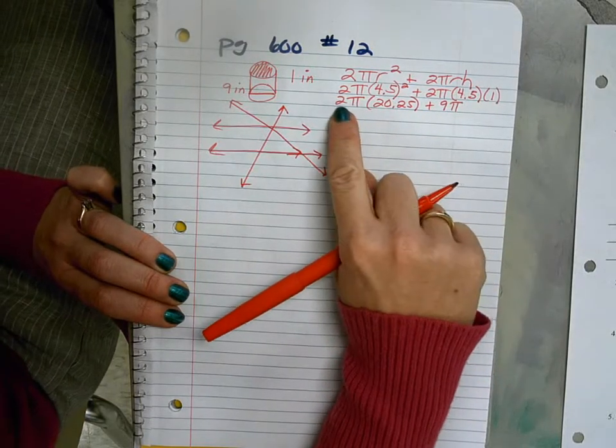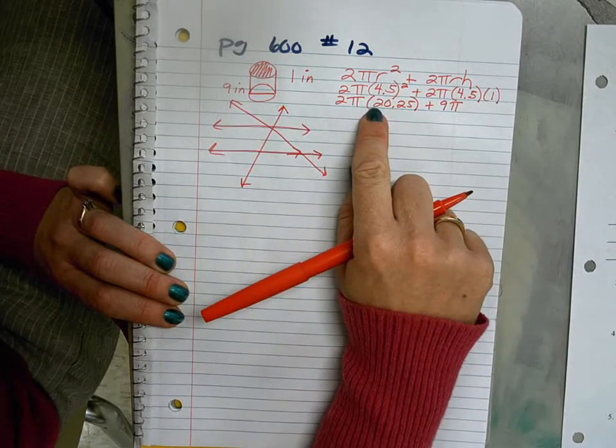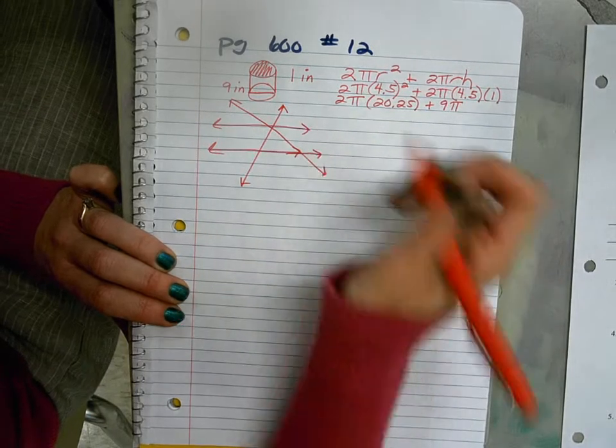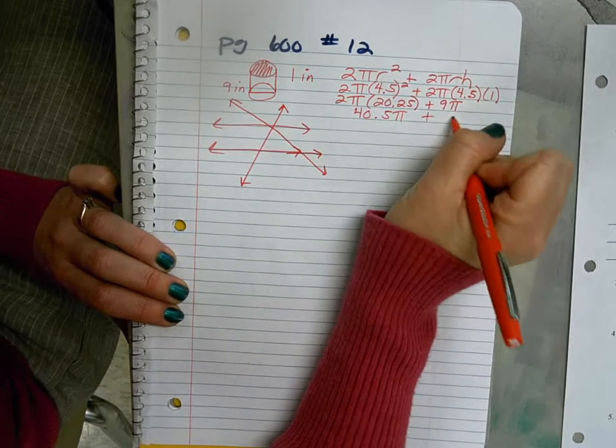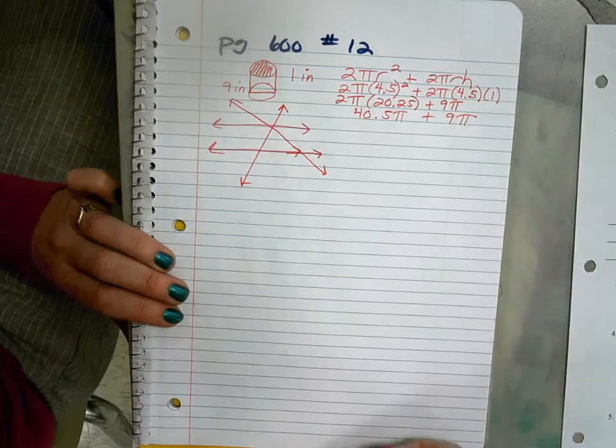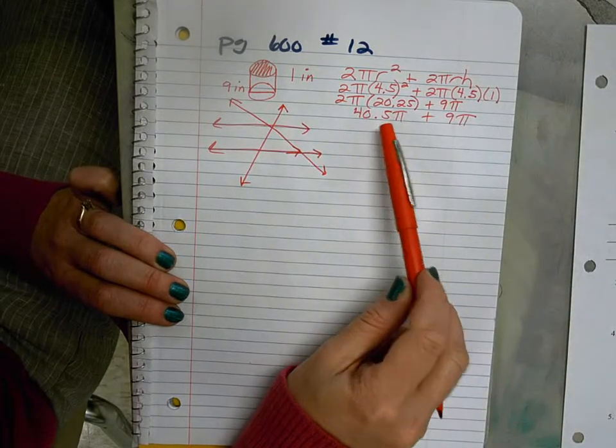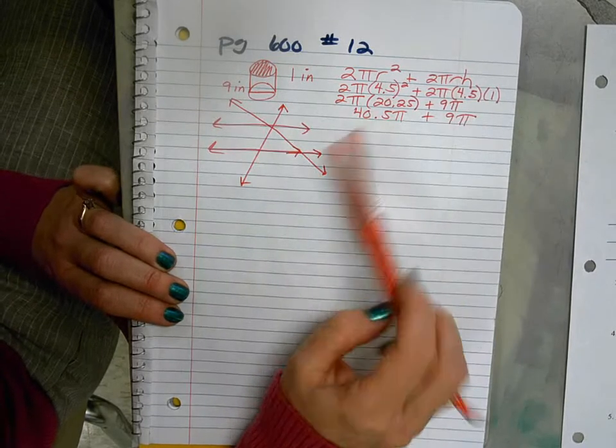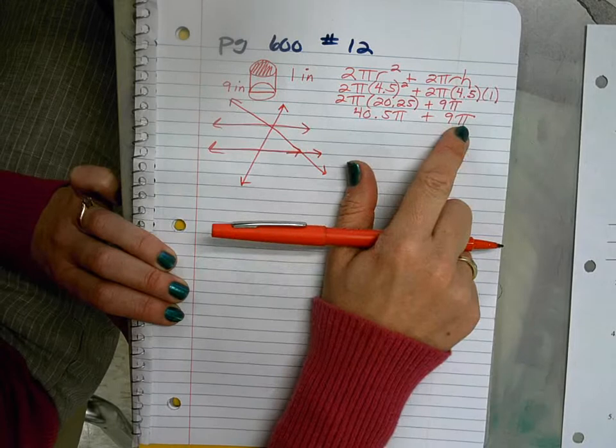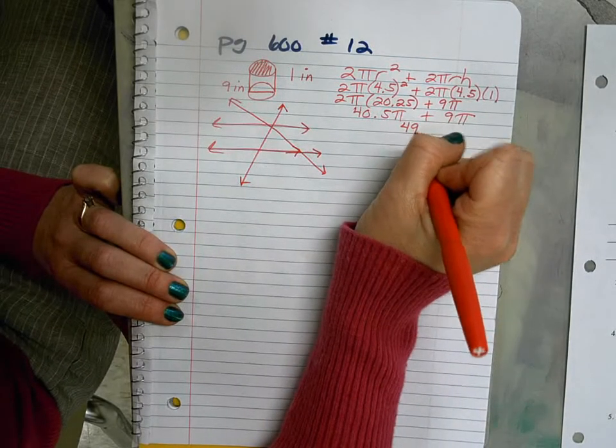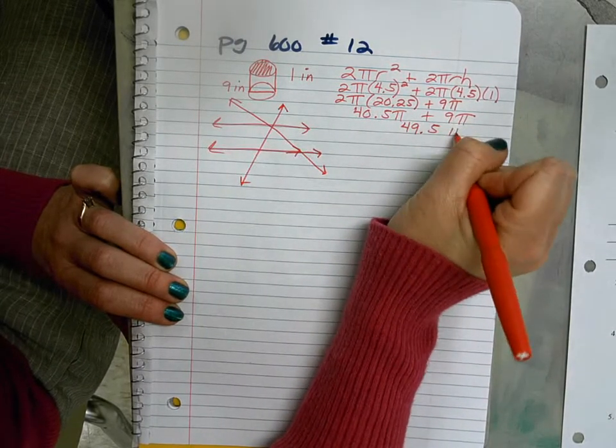2 times 20 is 40, a quarter times 2 is a half, so we get 40.5π plus 9π. And now we can combine our like terms. If this was 40 apples and 9 apples, we would just add the apples. This is 40.5 of a number plus 9 of the same number.